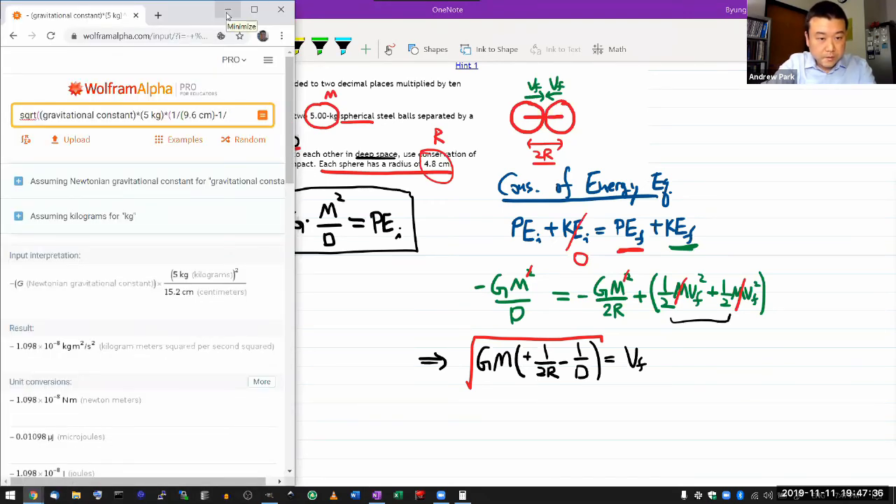Okay, I'm just going to use Wolfram Alpha to do all these calculations. So it's square root of the gravitational constant times five kilograms. We are no longer squaring it. Times one over 2R. I'll just do the calculation in my head. So it's 9.6 centimeter minus one over D, which was 15.2 centimeter. All right. Make sure that Wolfram Alpha understood it correctly. Square root of G times M times this length parameter thing. And I get 3.58 times 10 to minus 5 meter per second. Okay. So that seems reasonable. Let's plug it in and say 3.58.